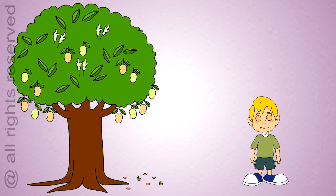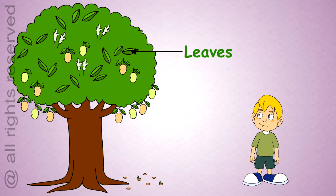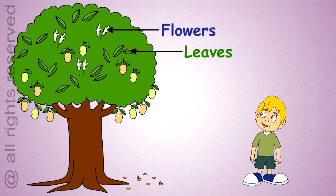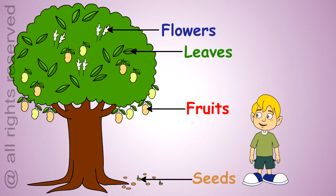Let us learn about the various parts of a plant. A plant has leaves, which make food for the plant. Flowers, which make seeds and sometimes turn into fruit. Seeds, which give birth to other plants. Fruit, which contains seeds for the new plant.